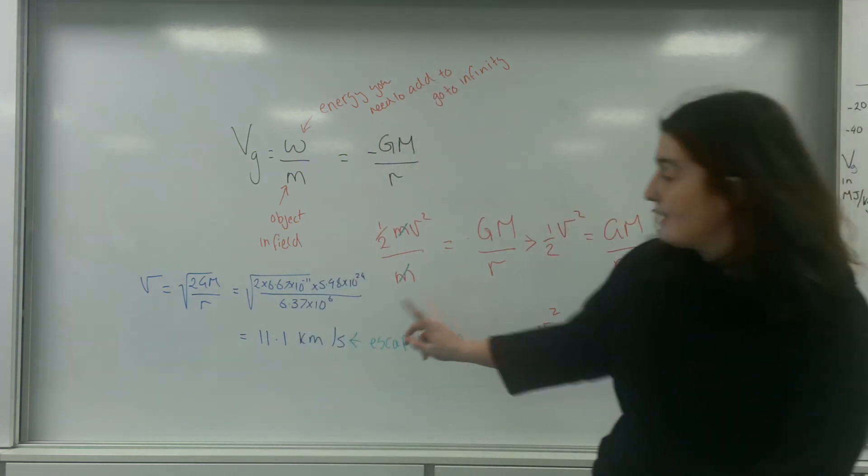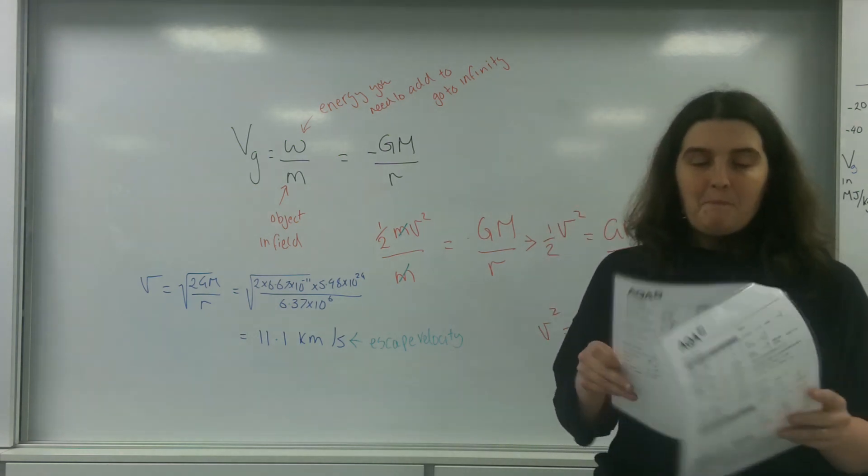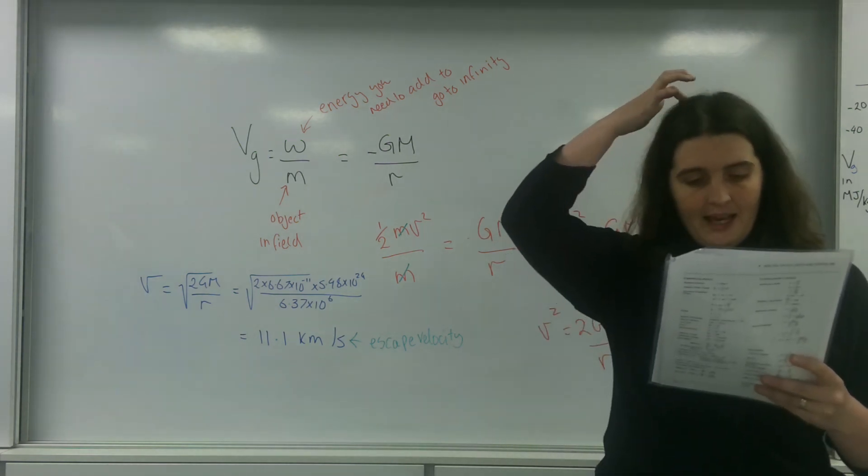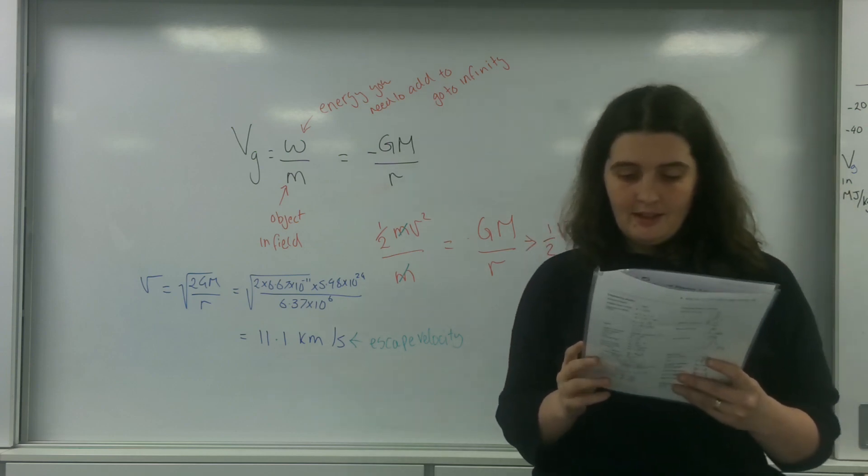Now this formula here is actually not on the data sheet. But it kind of is, and it's in a very different part of the data sheet, under Schwarzschild radius.